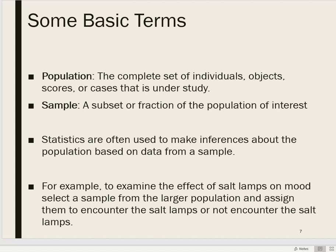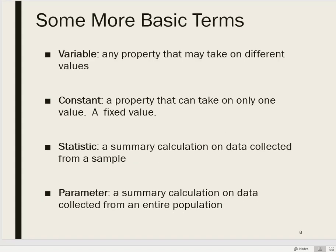A couple more basic terms to cover are variables. A variable is basically anything that can change or take on different values, either over time or within the context of a study. Almost every study involving humans might measure the participant's age, sex, or ethnicity — all of those things are variables.